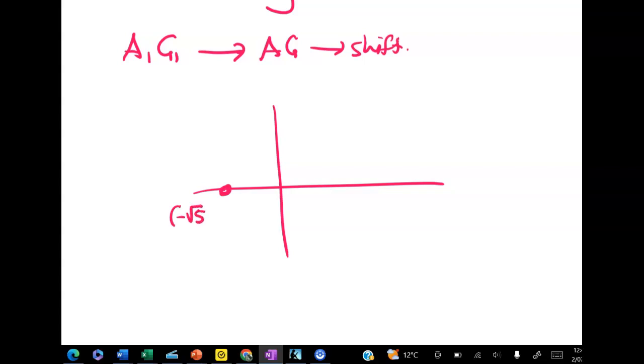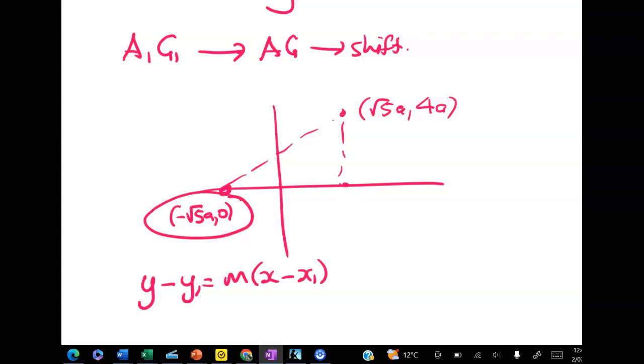We've got negative root 5a, 0 here and we've got root 5a and 4a here. So think back to how we find the equation of the line. We're going to use y minus y1 is equal to m times x minus x1. That means I need one point. I'm going to use this one and I need the gradient.